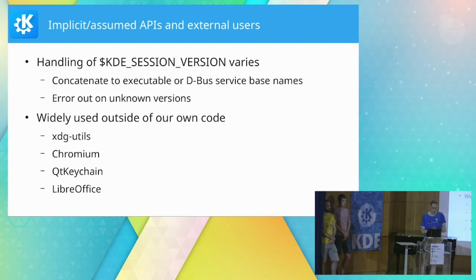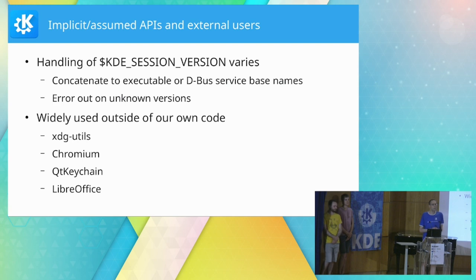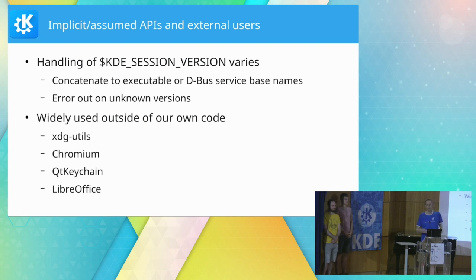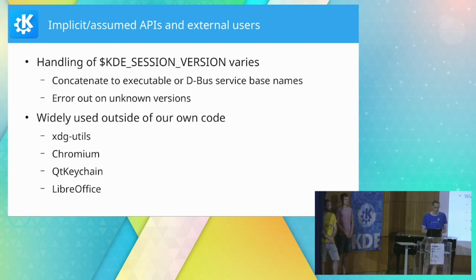Then we get to the dark corners. When we think about API, we usually think of C++, QML, and maybe CMake. However there is more that is de facto API — like the executables we install and their names, environment variables, and all the stuff we put in DBus. Since we don't really think about this as API, but people use it as API, there is some ambiguity about what is guaranteed, and then people get creative.